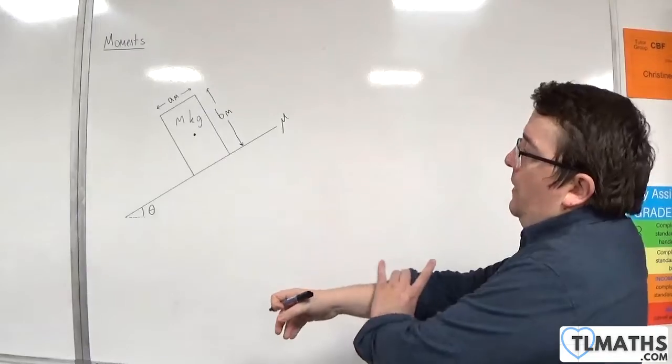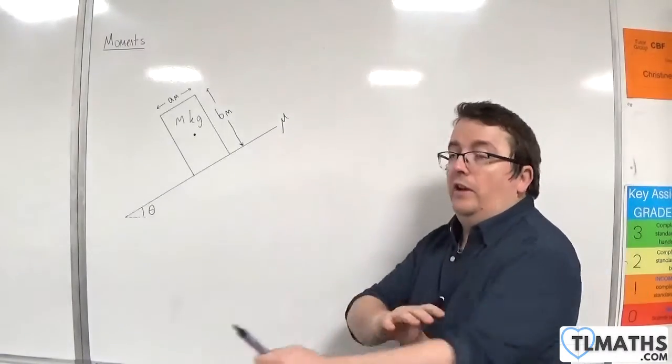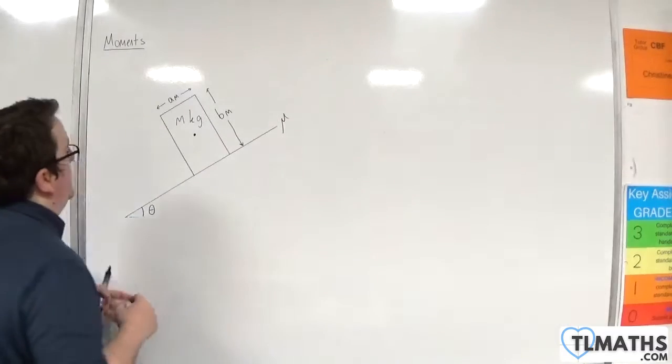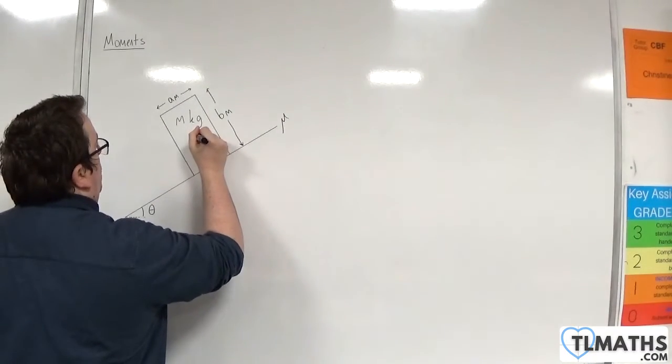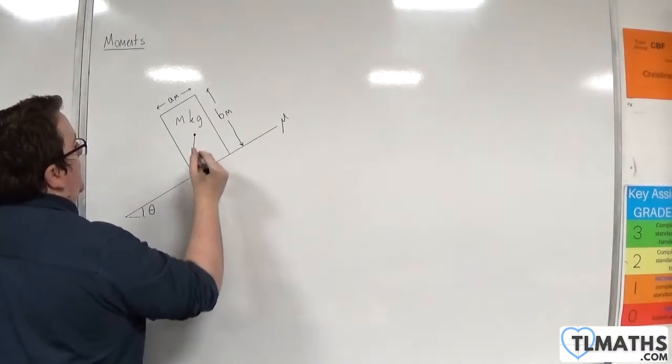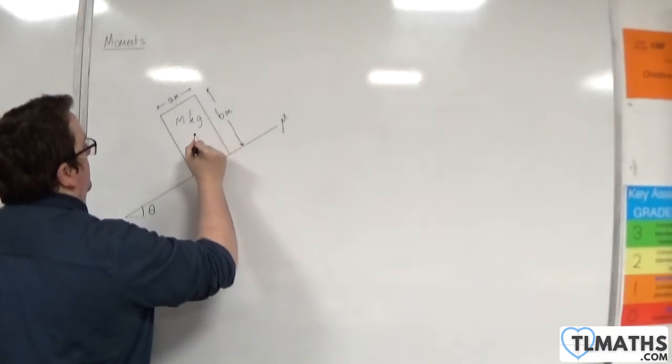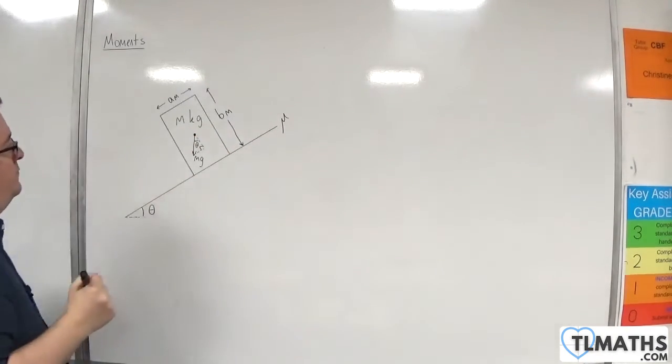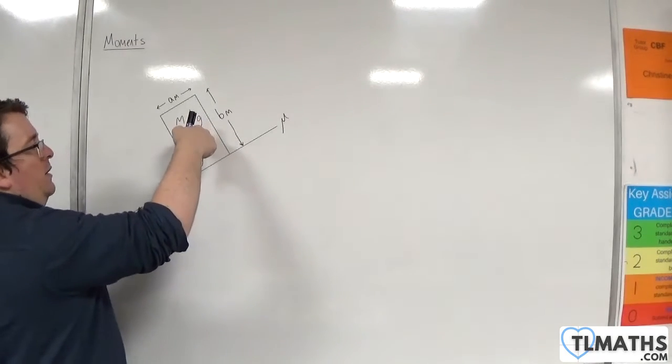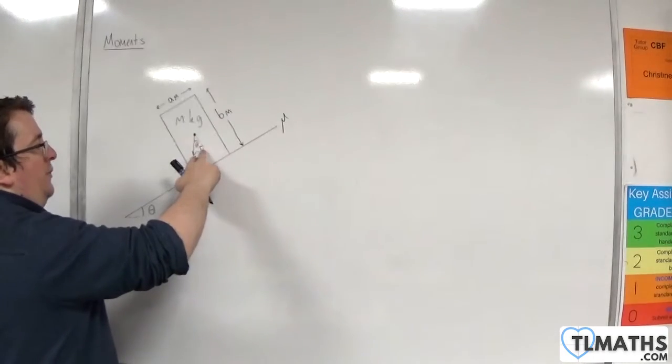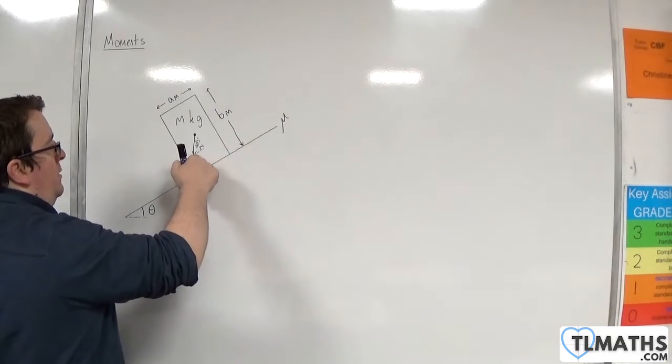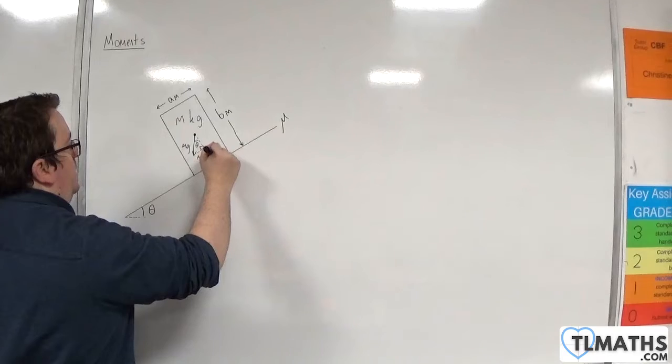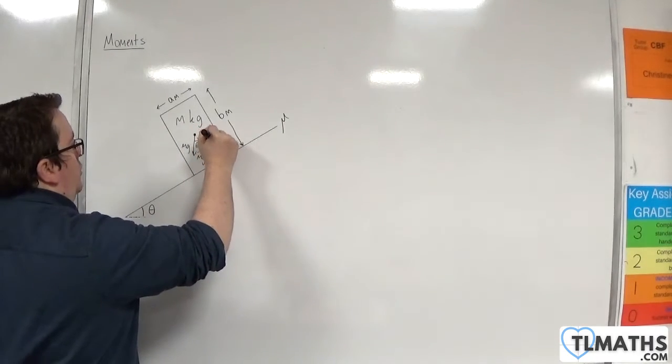So if we take a look first at when it's going to slide down the slope, let's add some forces onto our diagram here. We're going to have the weight acting through the center and that will be mg. And if I complete that right angle triangle, this angle will be theta. So we're going to have mg cosine theta and mg sine theta.